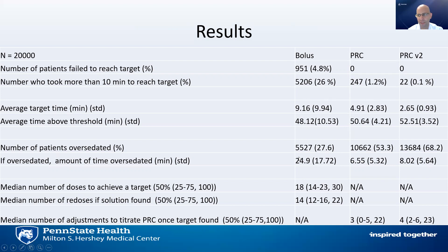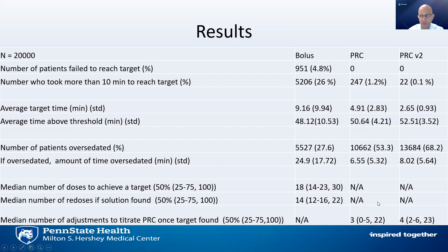That being said, if you were over-sedated in the bolus arm, you would spend a disproportionate amount of time being over-sedated compared to the PRC algorithm, because of the potential for repeated re-dosing into over-sedation. All things considered, you take about three or four adjustments on average once the target is achieved with PRC — there's a fair amount of letting go of the stick, so to speak, using a flight analogy — versus having to re-dose the patient 14 times in the bolus arm.